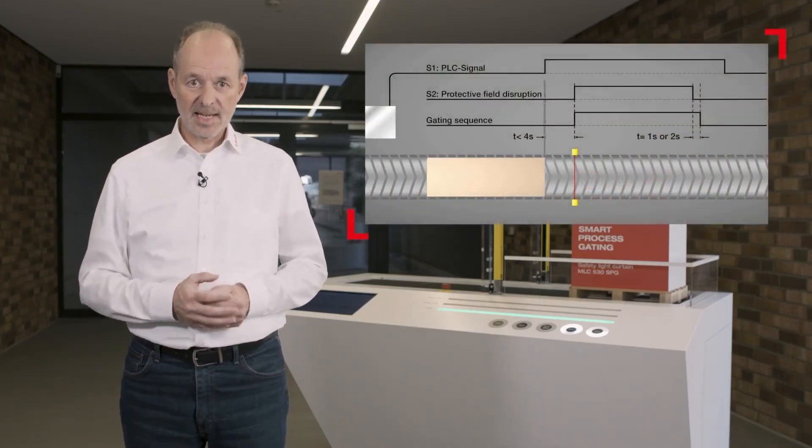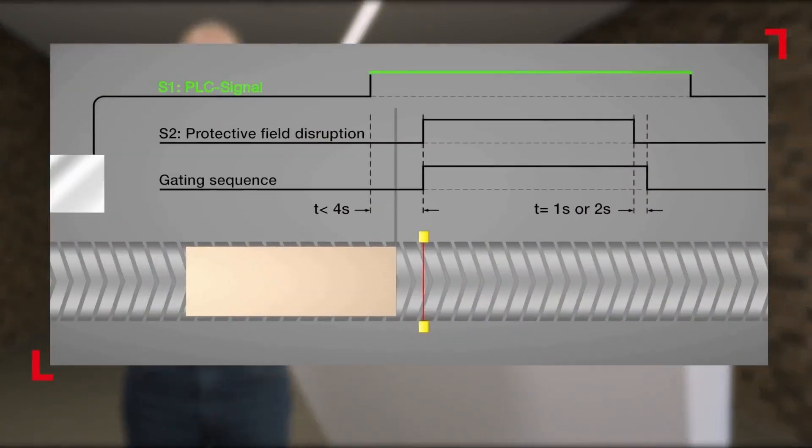What does the principle of operation look like? First, the control signal S1 is generated at this time. The goods to be transported may be not more than 200 millimeters away from the light curtain to prevent the possible slip through of a person.